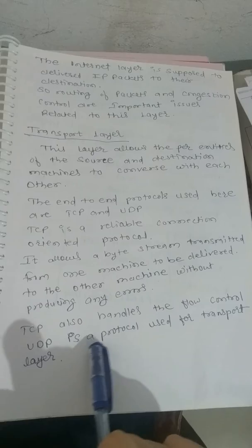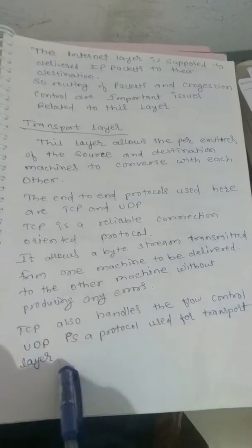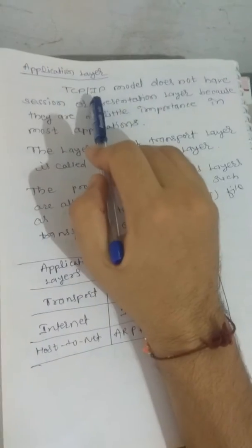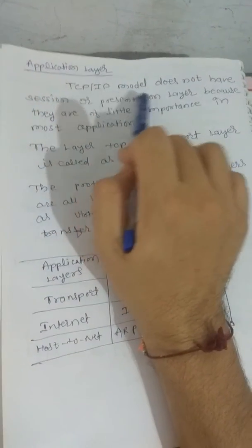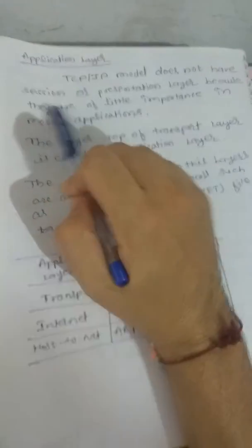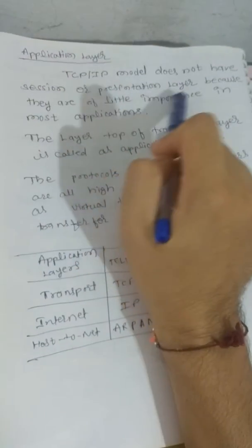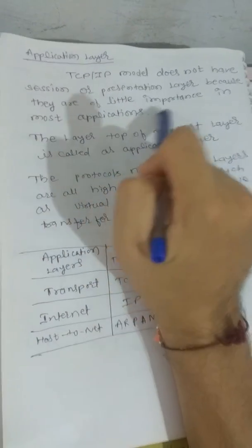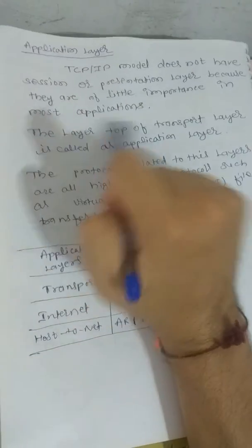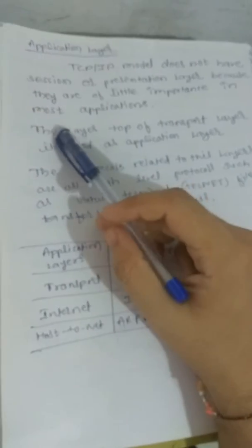TCP also handles flow control. UDP is another protocol used at the transport layer. The TCP/IP model does not have session or presentation layers because they are of lesser importance in most applications.